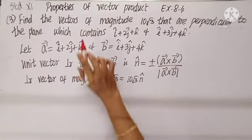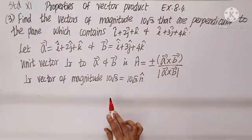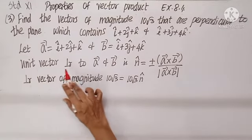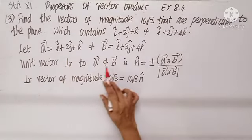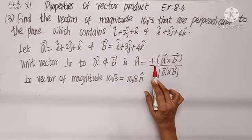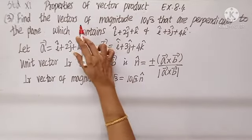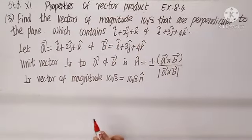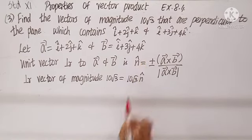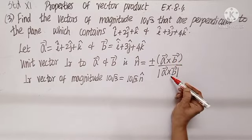Question 3: Find the vectors of magnitude 10√3 that are perpendicular to the plane containing the two given vectors. Naming them A and B, we know the unit vector perpendicular to the plane containing A and B is n-cap, with formula: n-cap = ± (A cross B) / mod(A cross B). Since the question asks for a vector of magnitude 10√3, we multiply n-cap by 10√3.